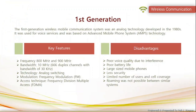The first generation system was an analog technology used for voice services, based on advanced mobile phone system technology and developed in 1980. Some key features were analog switching, frequency modulation, and frequency division multiple access. This generation had drawbacks like poor voice quality and battery life, large-sized mobile phones, limited number of users and cell coverage, and roaming was not possible between similar systems.